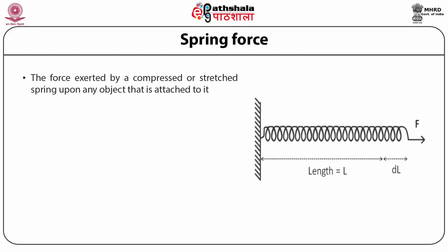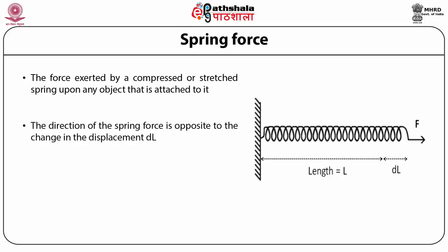Spring force is exerted by a compressed or stretched spring on any object attached to it. With the spring fixed at one end and pulled with force F at the other, if the original length is L and the extension is dL, the spring force is opposite to the pulling force and equals k × dL, where k is the spring constant — a property of the spring material.